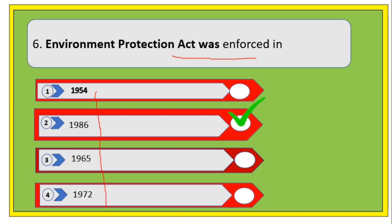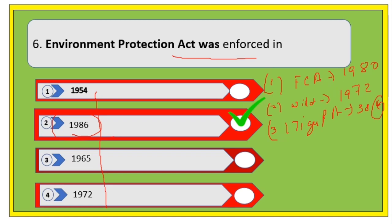Next question: the Environmental Protection Act was enforced in — the right answer is 1986. Also remember: the Forest Conservation Act was enacted in 1980; the Wildlife Protection Act was enacted in 1972; and the Tiger Protection Act has 38 schedules under the Wildlife Protection Act 1972.